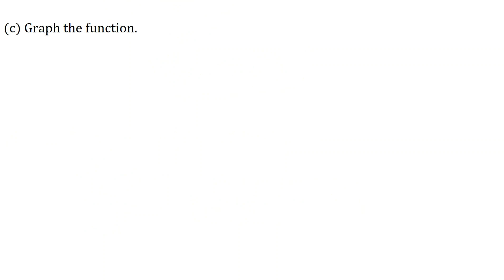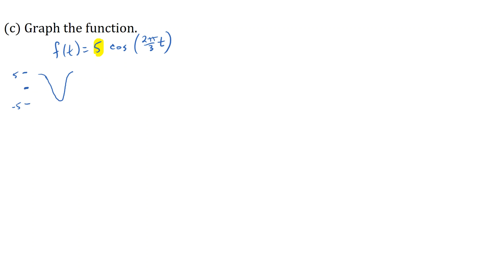Now we want to graph the function so we can visually see this motion. F of t equals five times the cosine of two pi over three times t. This is a cosine function, so its general shape starts at the maximum value, comes down to the minimum, and returns for one cycle. Because we're multiplying by five, it's stretched vertically — maximum value of five and minimum value of negative five instead of one and negative one. Its average value is zero, oscillating around the rest position.